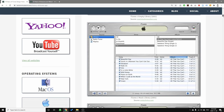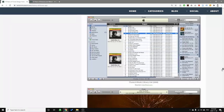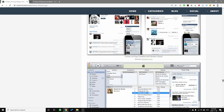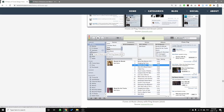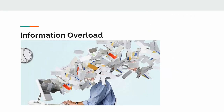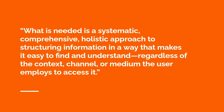So if we start from the beginning: iTunes in its simplest form was just a CD ripper and music player. When you get to the final, busier platforms, it does a whole bunch of things. What does all this have to do with information architecture? This quote from the Polar Bear book sums it up really well: 'What is needed is a systematic, comprehensive, holistic approach to structuring information in a way that makes it easy to find and understand, regardless of the context, channel or medium the user employs to access it.'